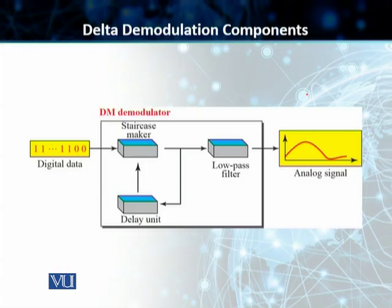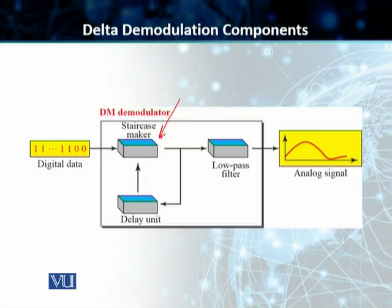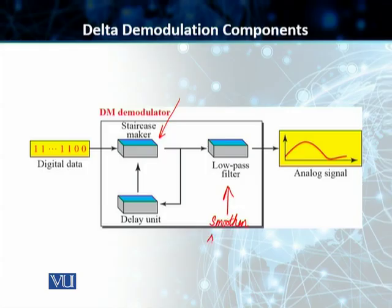Now let's talk about delta demodulation. At the receiving end, the stream of bits is received one by one — there are no code words in DM. The demodulator takes this data and uses the staircase maker again, along with the delay unit. A low-pass filter is then used to smoothen that staircase signal into a replica of the original analog signal.